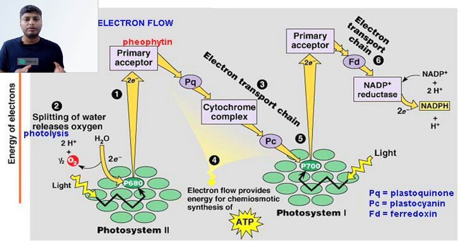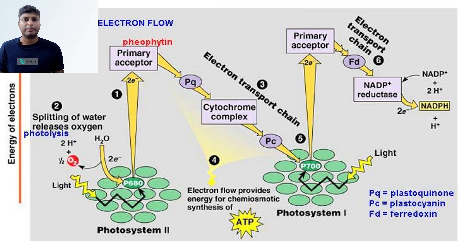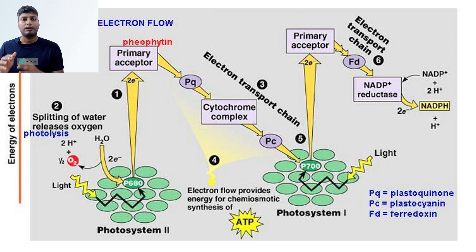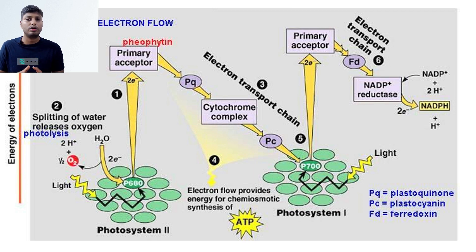PS2 is now unstable because the electrons it originally emitted have not returned. A very important step occurs here: photolysis of water. Photolysis is the splitting of water in the presence of sunlight. When water splits, it forms H⁺ ions (protons), electrons, and oxygen is released. The electrons released during photolysis are accepted by PS2, which brings it back to its normal ground state.